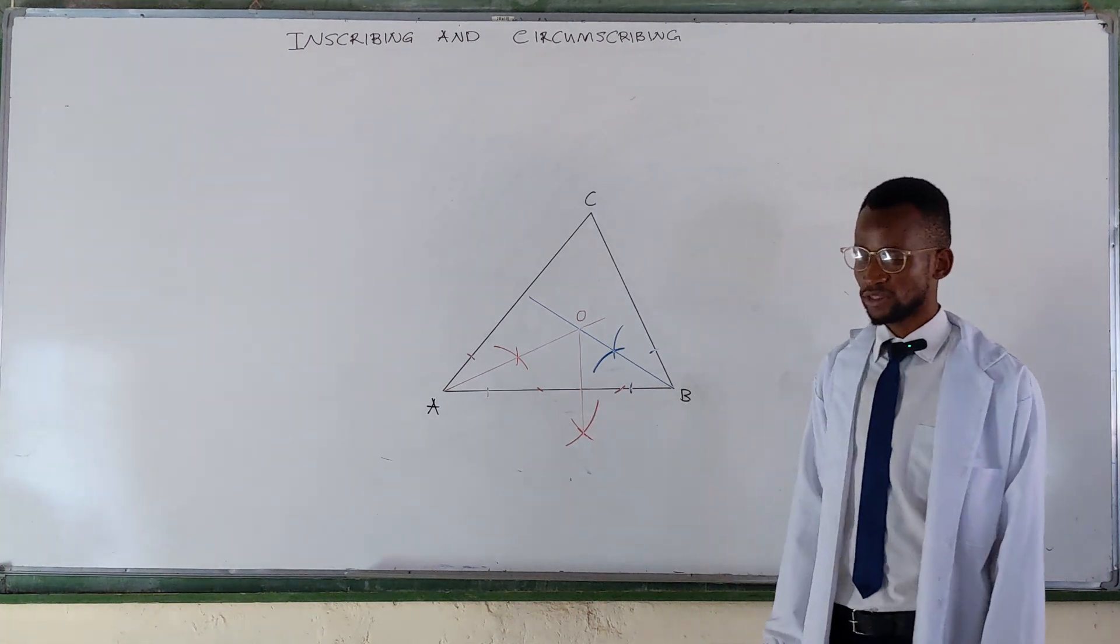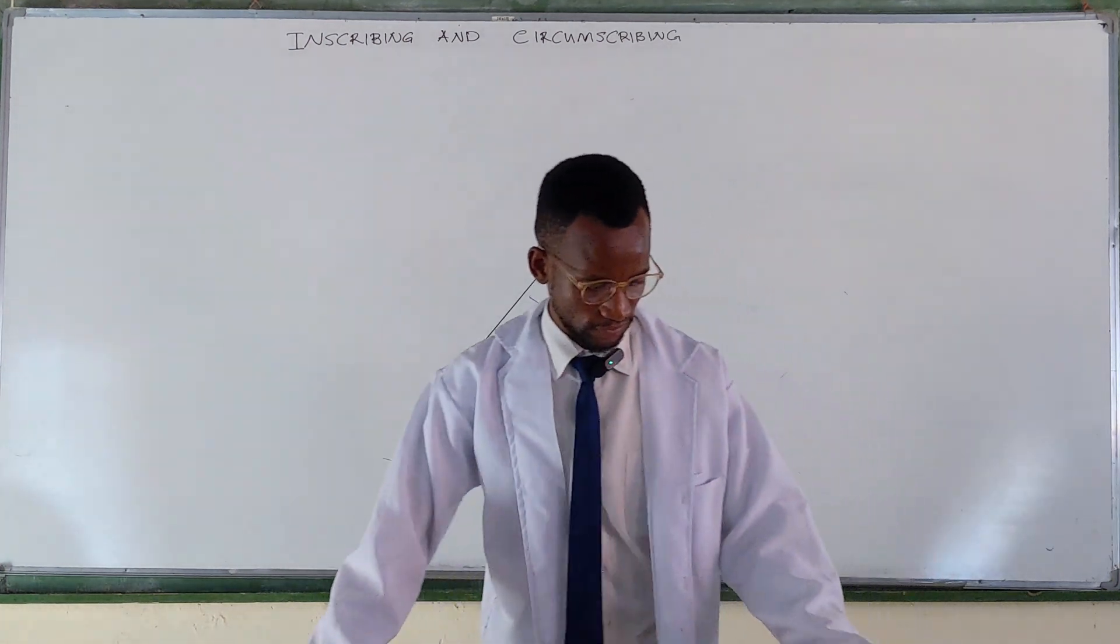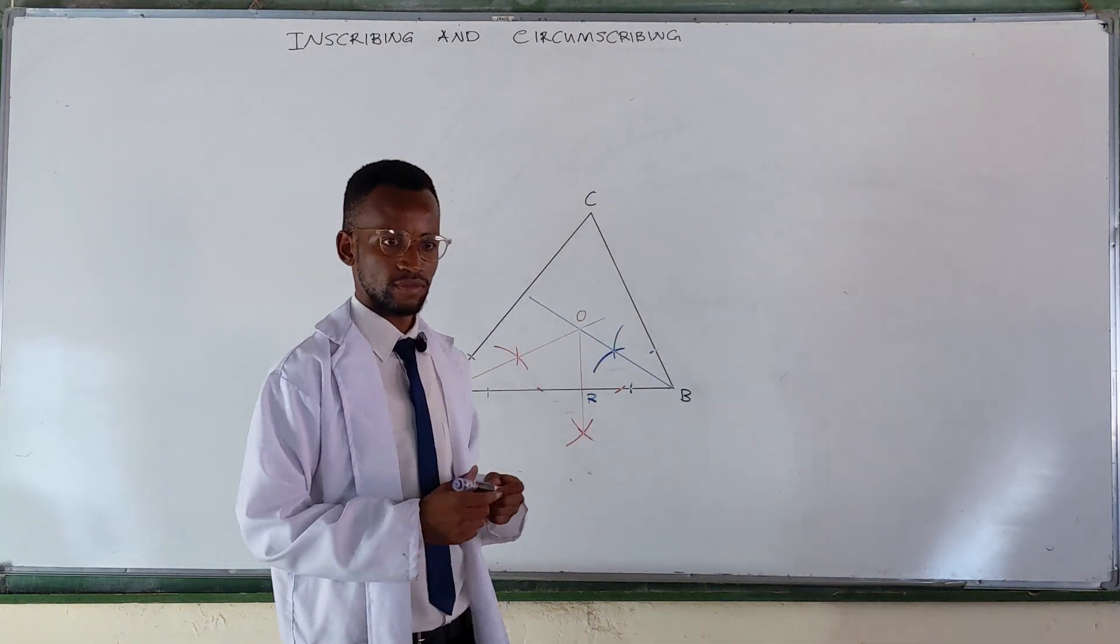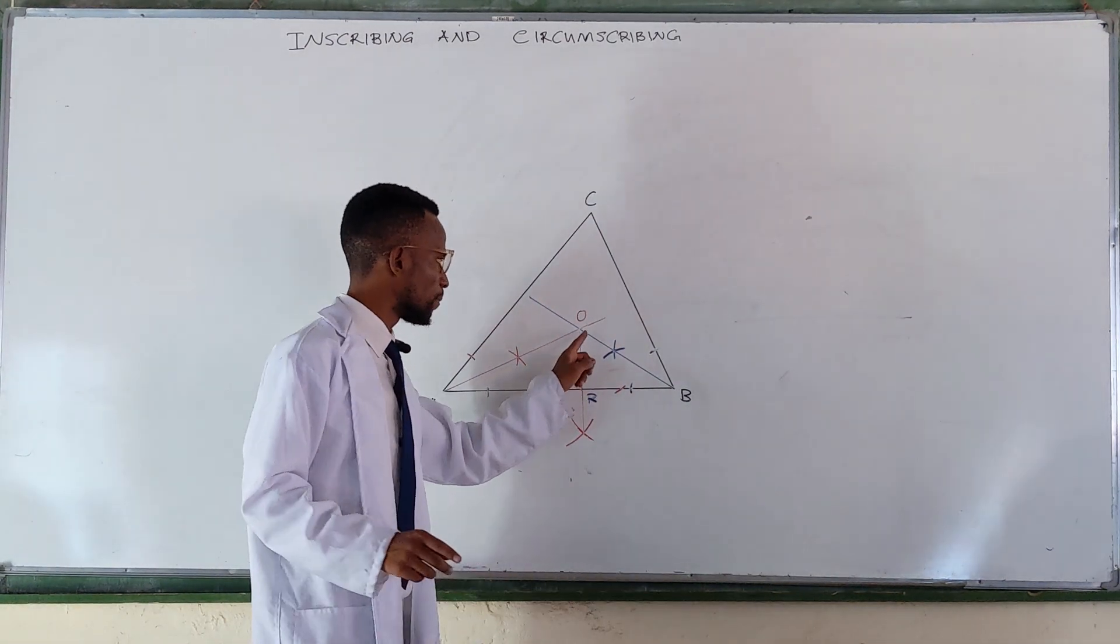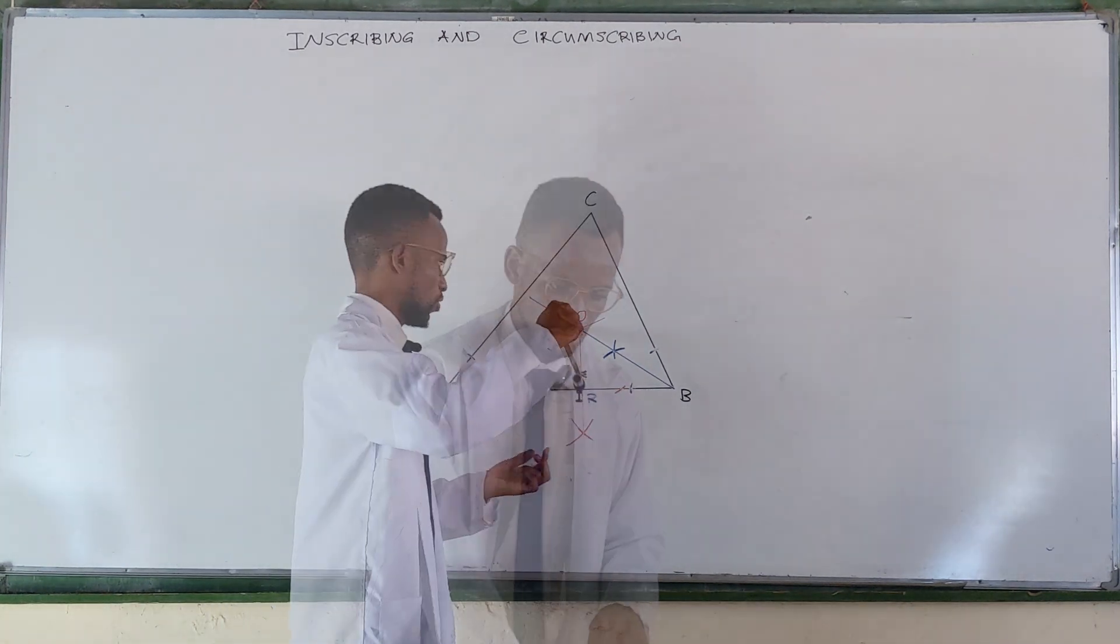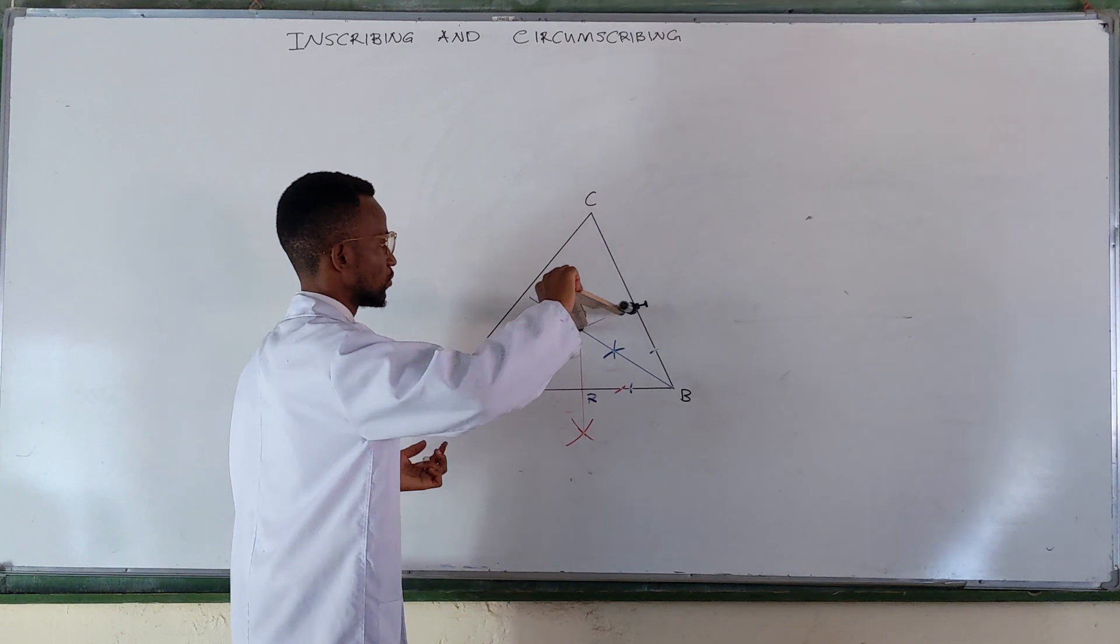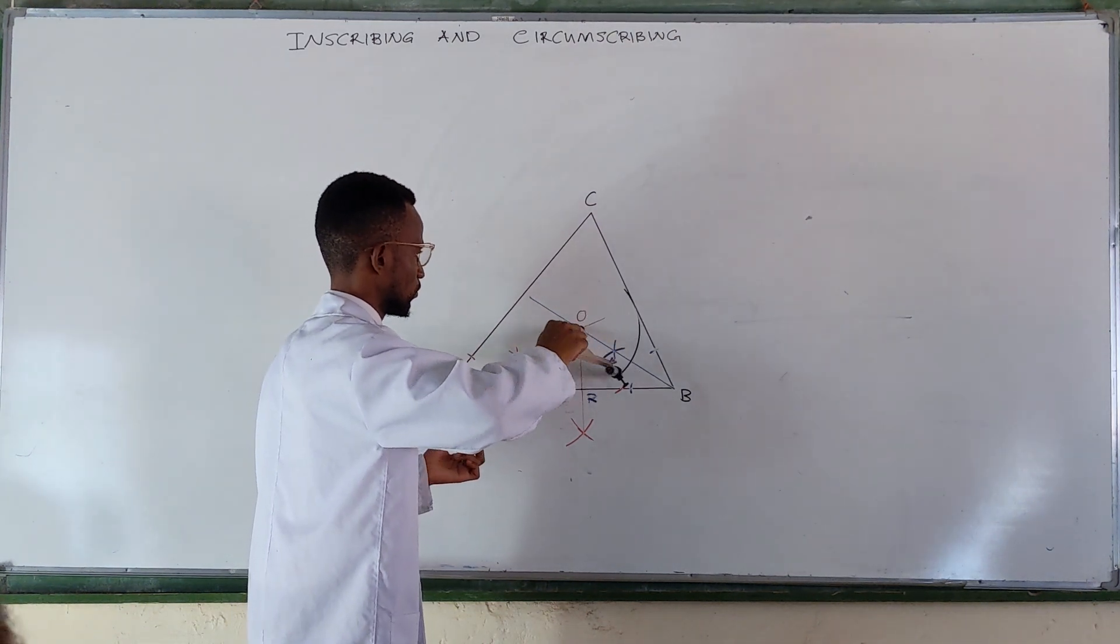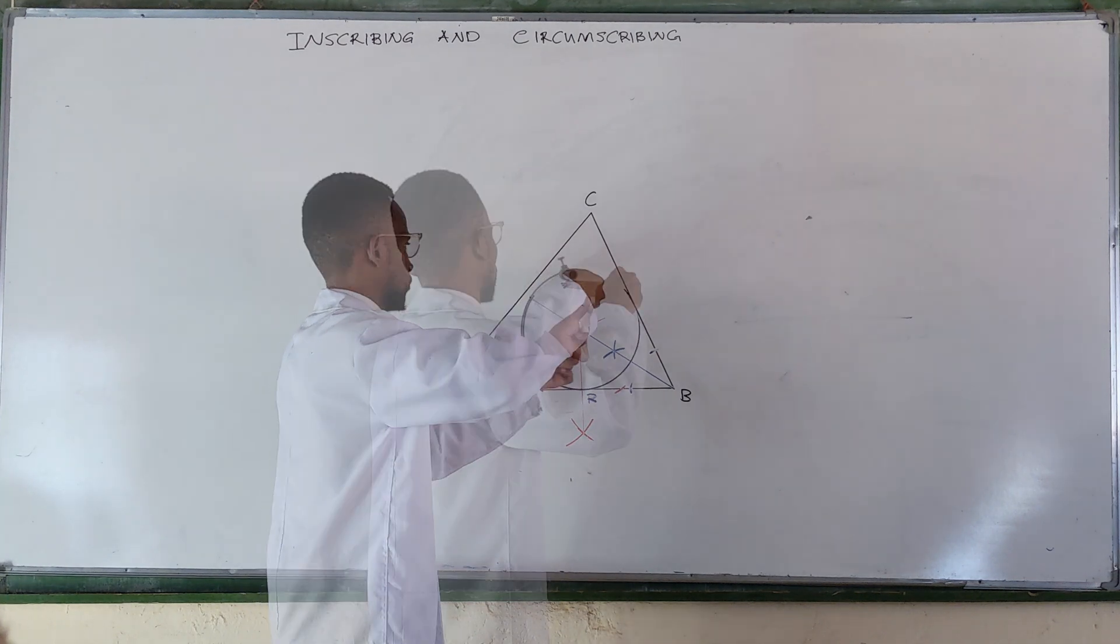Meaning your radius will be... you get your compass, place it at that point, open to... alright. Okay.